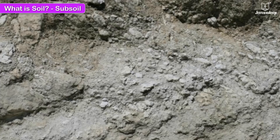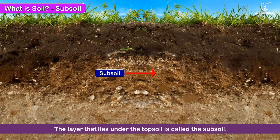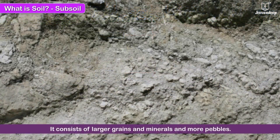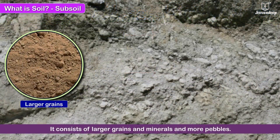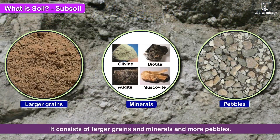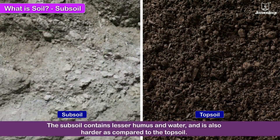The layer that lies under the topsoil is called the subsoil. It consists of larger grains and minerals and more pebbles. The subsoil contains lesser humus and water and is also harder as compared to the topsoil.